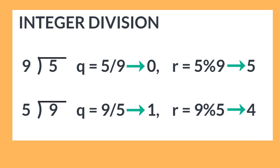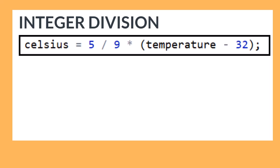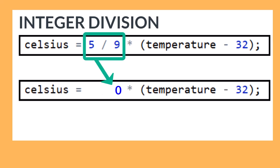And 9 divided by 5 will always be 1, remainder 4. It doesn't matter that we are storing the result in a double data type or that we are multiplying by a double data type for temperature. What is happening is that the expression 5 divided by 9 times, open parenthesis, temperature minus 32, close parenthesis, semicolon, is being evaluated from left to right with the integer division of 5 divided by 9 occurring first.